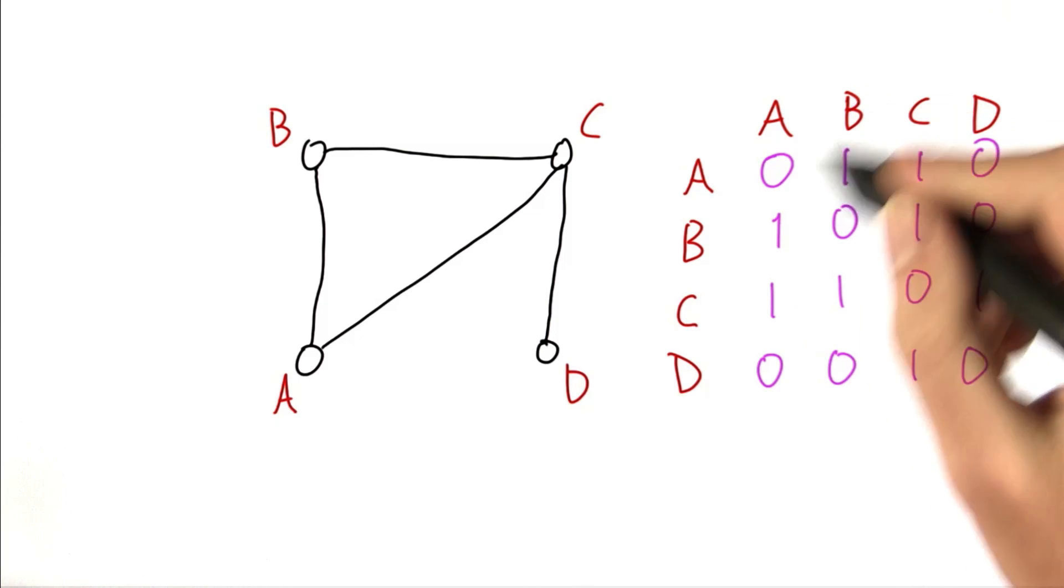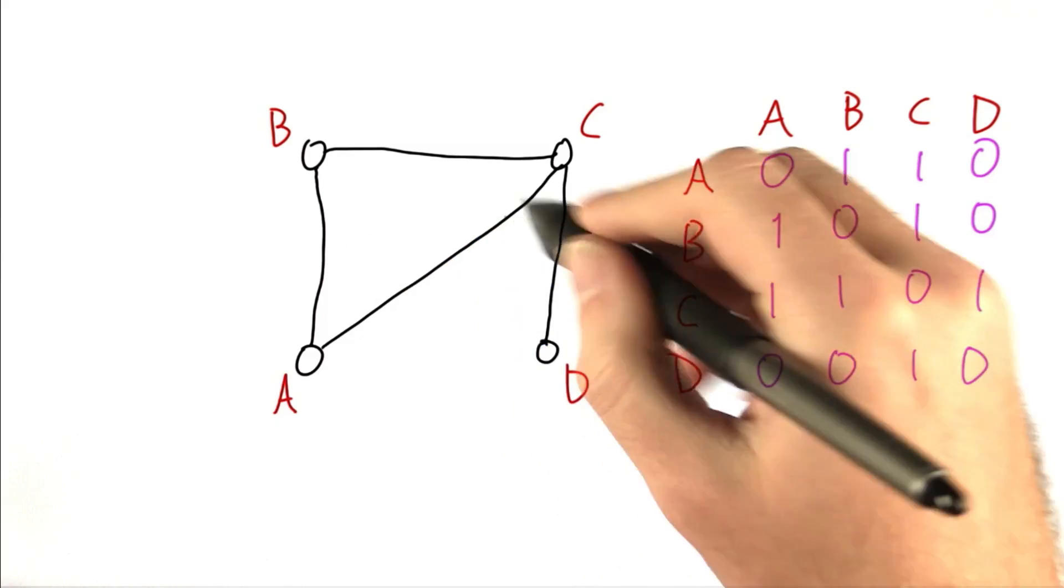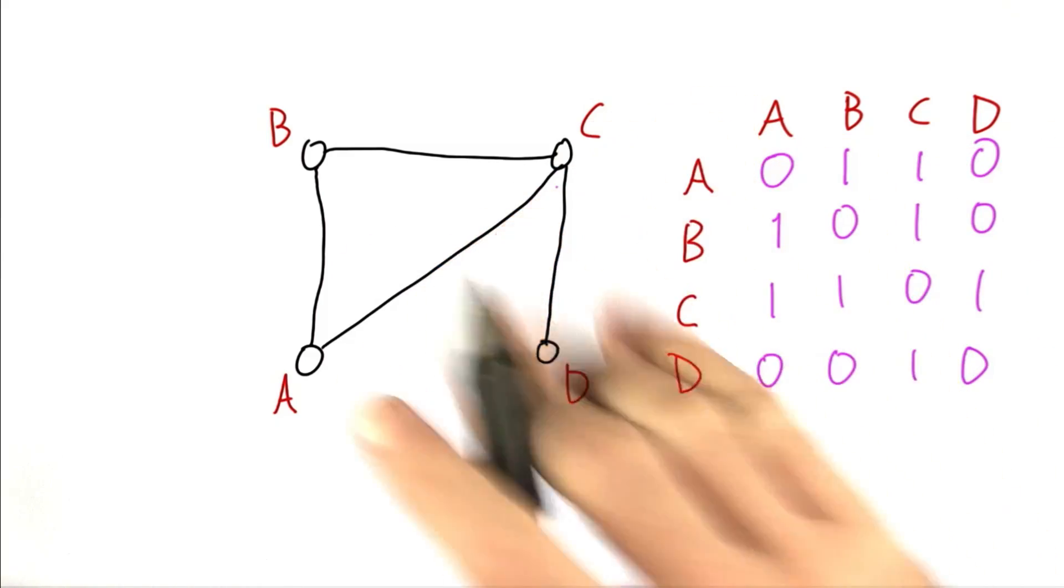So A is connected to B, which means that B is also connected to A. It's not necessarily the case if you have a direction on each of these arrows, but we're not going to worry about that right now.